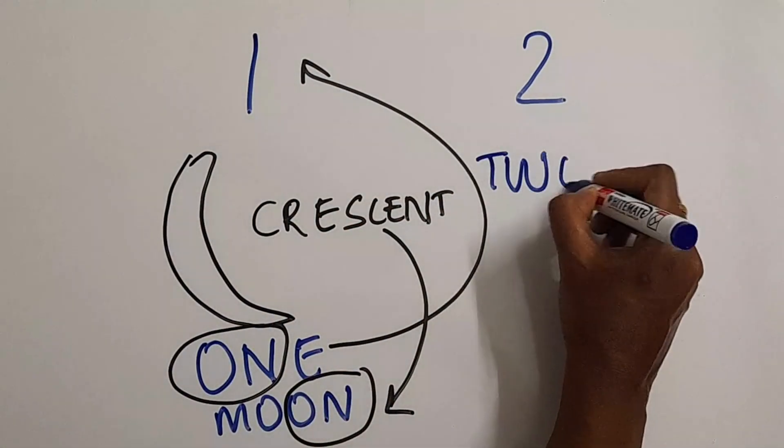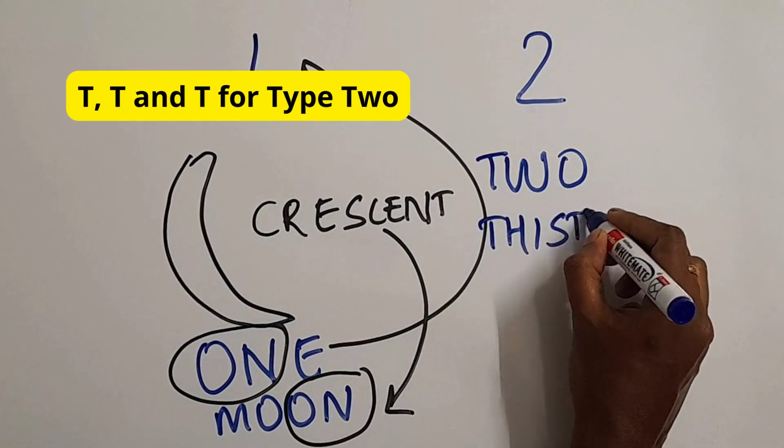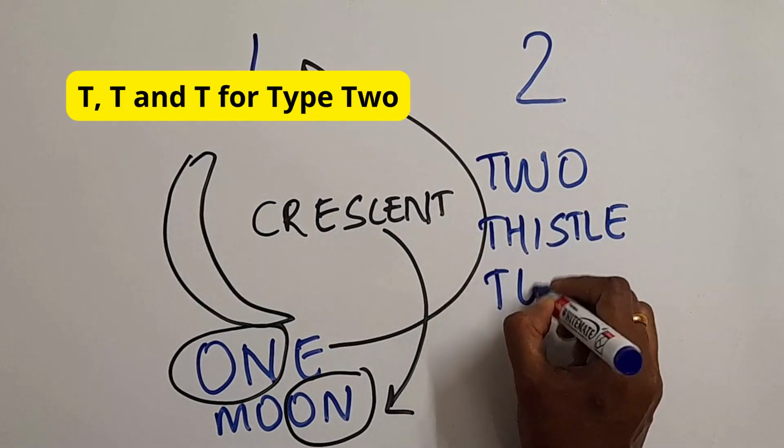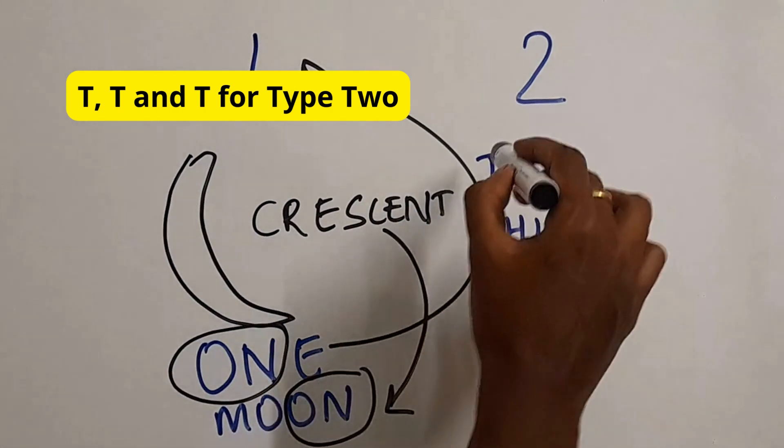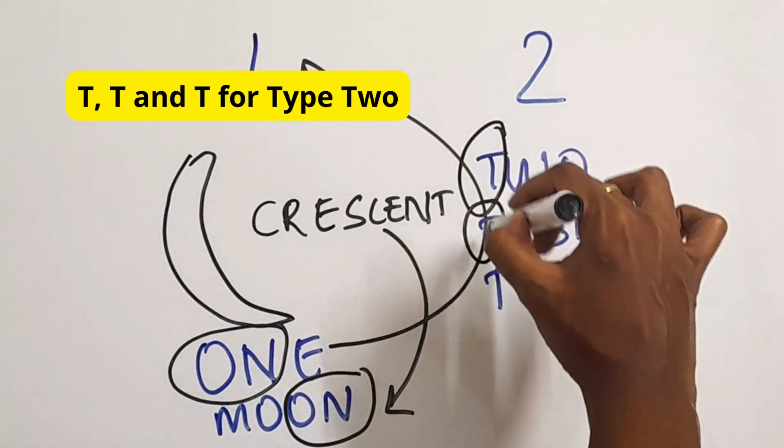Type 2 is thistle shaped, and two starts with the letter T—thistle with a T and tube with a T. So that's an easy way to remember.